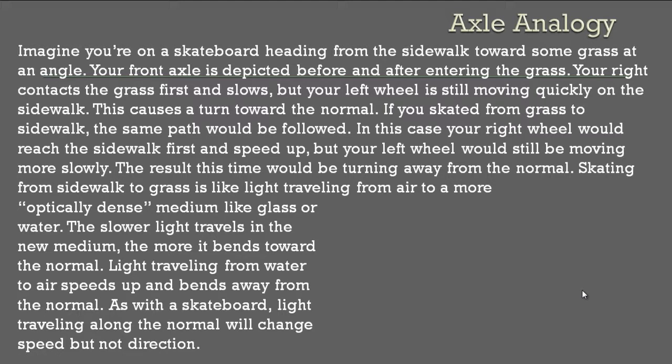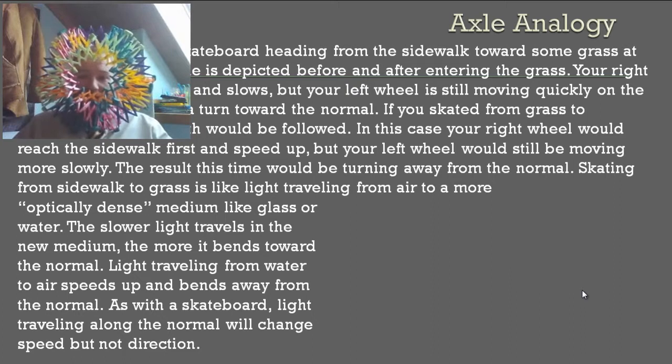Imagine you're on a skateboard heading from the sidewalk towards some grass at an angle. Your front axle is depicted before and after entering the grass. Your right wheel contacts the grass first and slows down, but your left wheel is still moving quickly on the sidewalk. This causes a turn towards the normal. If you skated from grass to sidewalk, the same path would be followed. In this case, your right wheel would reach the sidewalk first and speed up, but your left wheel would still be moving more slowly. The result this time would be turning away from the normal.